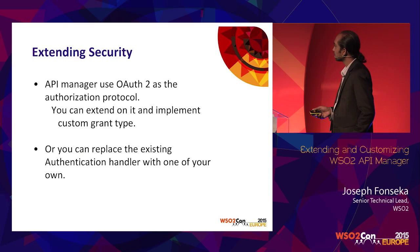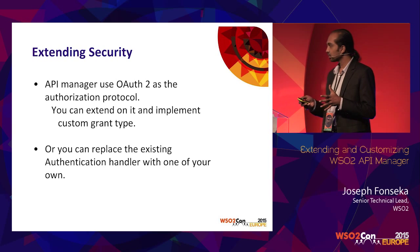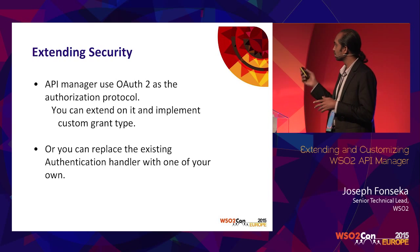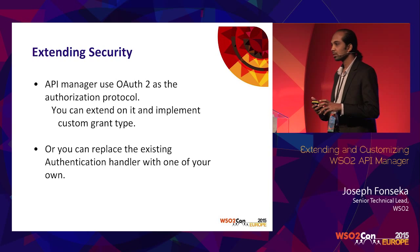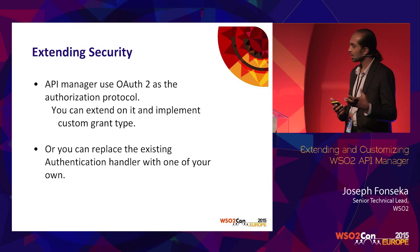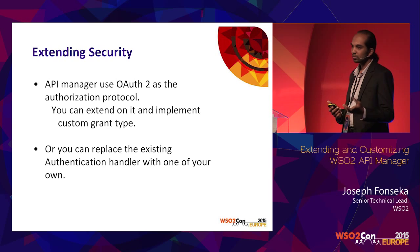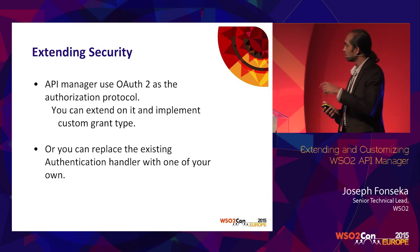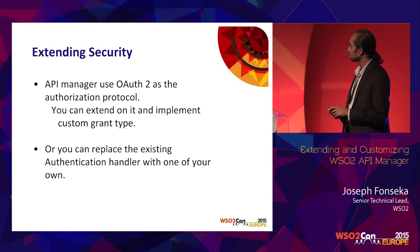The next extension area is security. The main authentication and authorization protocol we use is OAuth 2. One extension point is to add new grant types based on your business requirements. The second way is to write a completely new authentication handler. For example, if you want to use basic auth instead of OAuth 2, you can add an authentication handler to authenticate API requests with basic authentication.